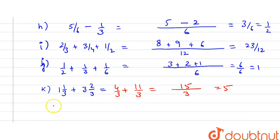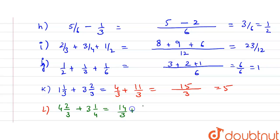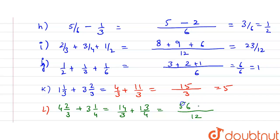Part (l) is 4⅔ + 3¼. Convert: 4⅔ = 14/3, and 3¼ = 13/4. The LCM of 3 and 4 is 12. So 4 × 14 = 56 and 3 × 13 = 39. Adding 56 + 39 = 95, giving 95/12.